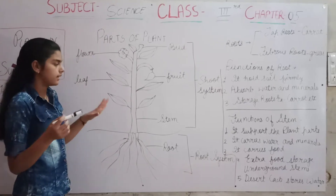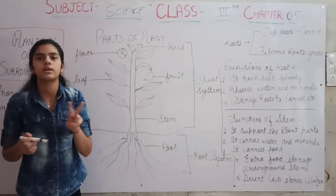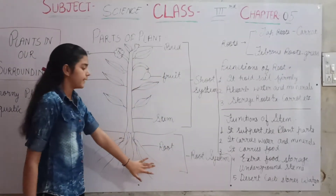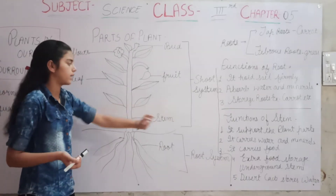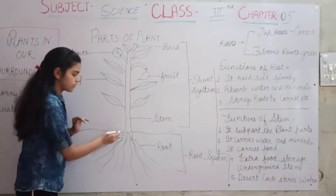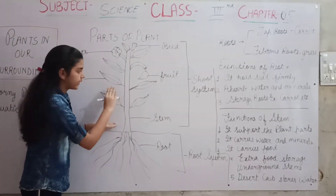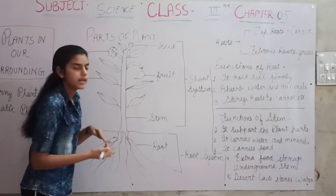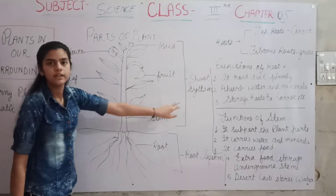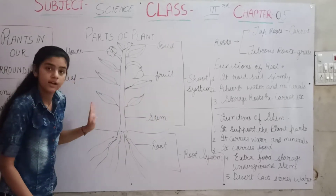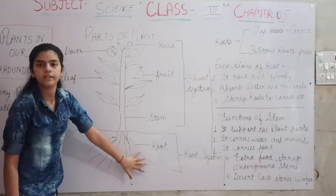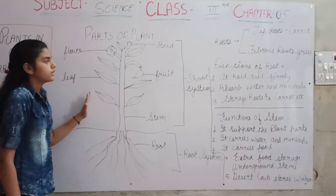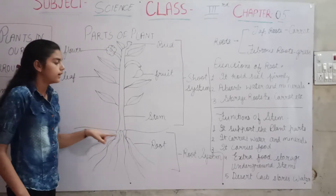The system of the plants is divided into two systems. The first system is the shoot system and the second is the root system. The part which is present above the ground is known as the shoot system. The part which is present under the ground — like roots — is called the root system. You should not be confused between these two systems.